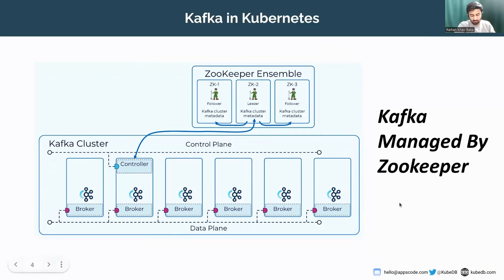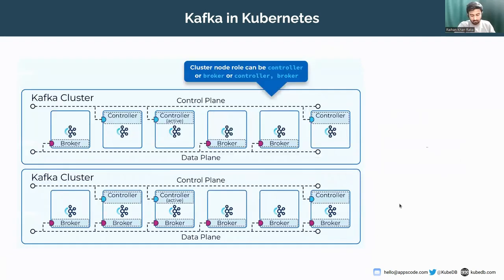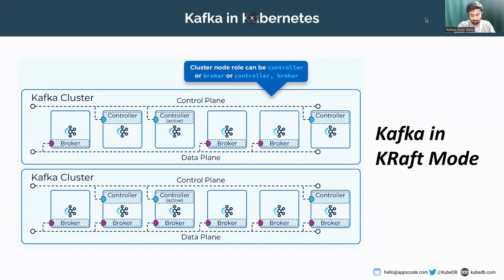Later, Kafka came up with a new protocol called KRaft, or Kafka Raft. Starting from Kafka version 3.3.0, the Kafka control plane is based on a new internal production-ready feature called KRaft. The dependency on ZooKeeper is eliminated. In KRaft, a subset of brokers are designated as controllers, and these controllers provide the consensus services that used to be provided by ZooKeeper. All cluster metadata is stored in Kafka topics and managed internally instead of being stored in ZooKeeper.